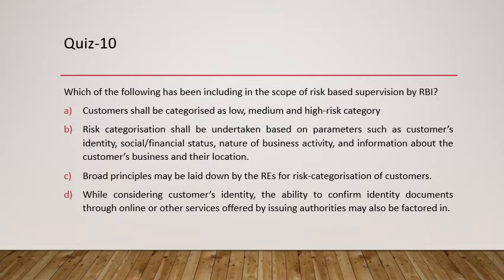Question ten asks what has been newly included in the scope of risk-based supervision by RBI. Customers are categorized as low, medium, and high risk based on parameters such as identity, financial status, nature of business activity, and location — these were already in place. The newly introduced element is the broad principles that may be laid down by regulated entities for risk categorization of customers.